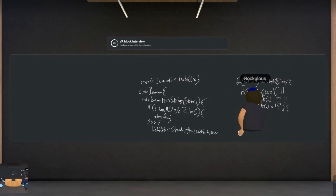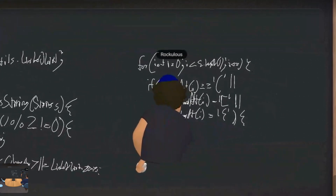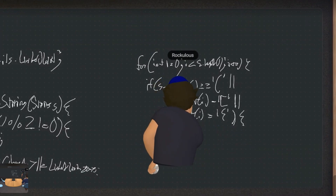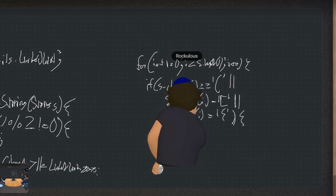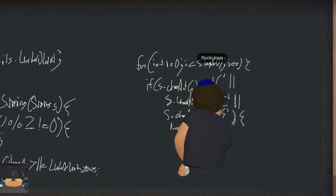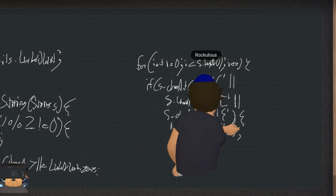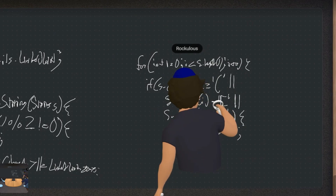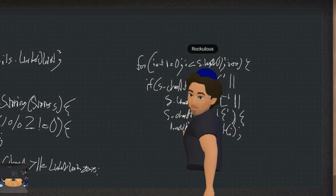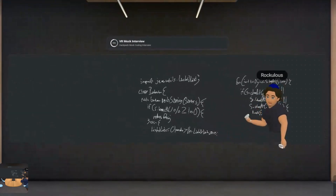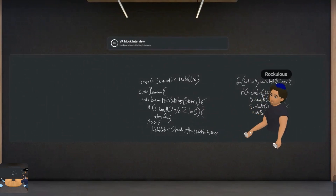So here we're going to add the element to the linked list: ll.addFirst(s.charAt(i)). So if I find an open parenthesis, open bracket, or open curly, I add that to the first element of the linked list. Then when I find any of the closing characters, I'll remove the first element and see if it matches.